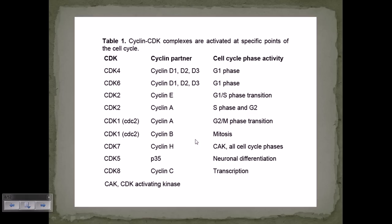During mitosis, Cyclin B partners with CDK1. CDK1 is much more active with Cyclin B and drives the cell throughout mitotic cell division, until finally the anaphase-promoting complex arrives.